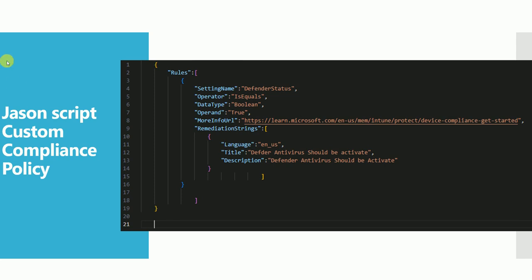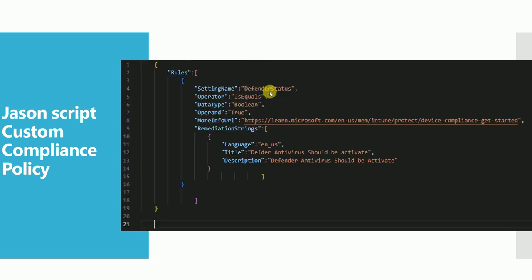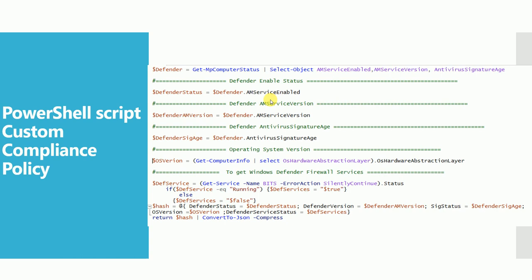Here is a sample JSON example. You start with a bracket, add your rules and put in your information. This JSON is totally dependent on your PowerShell — based on your PowerShell output, your JSON will be designed. Here you can see the defender status. I created it just for one rule, and I uploaded both the PowerShell and JSON files to my GitHub profile.